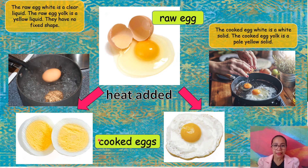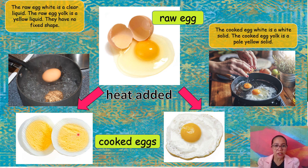Look at the color. The cooked egg white is a white solid. The cooked egg yolk is a pale yellow solid. So it changes in color when heat is added.